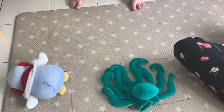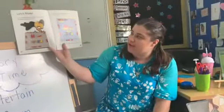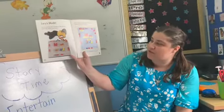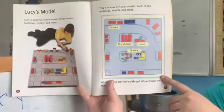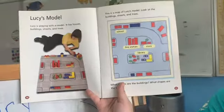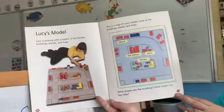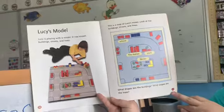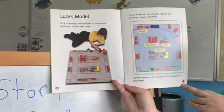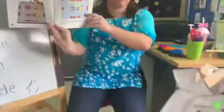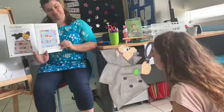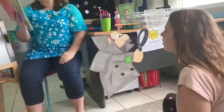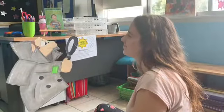Lucy is playing with a model. It has houses, buildings, streets, and trees. What shapes are the buildings? What shapes are the trees? The buildings are rectangles and the trees kind of look like broccoli — they're just like little green lumps. Maybe weird green clouds. I don't know what shape you'd call that!